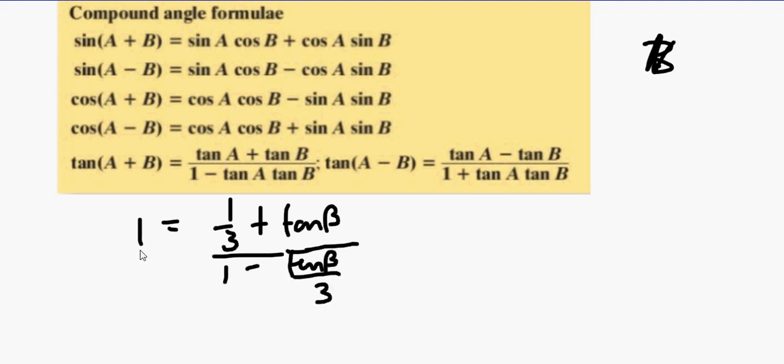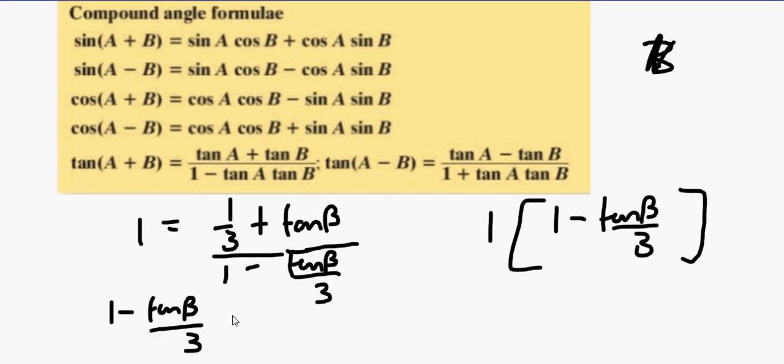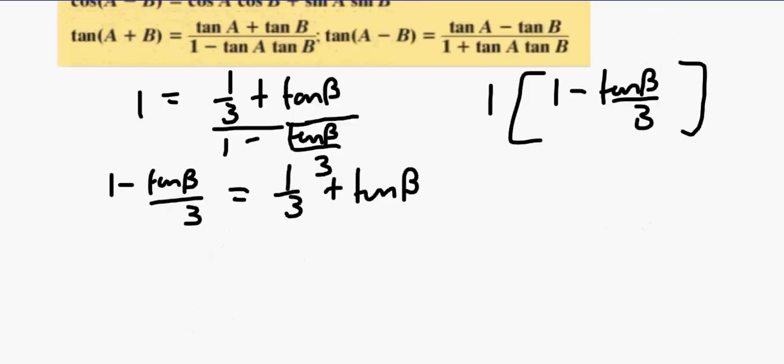Okay, cross multiply. 1 times all that equals one third plus tan B. You can give them all a common denominator if you want - that's 3 over 3, and that's 3 tan B over 3, so I'm still with the fractions. That's all the fractions - they're gone.